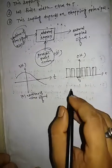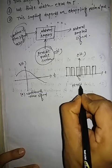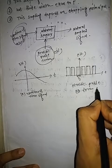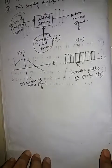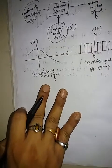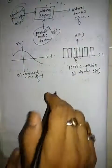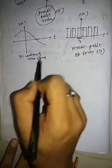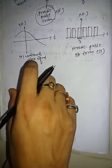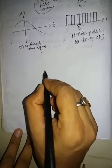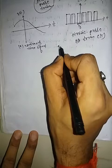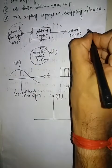We have the continuous time signal and the periodic pulse train CT. These two signals are multiplied with each other, and the result generates the natural sampled signal, denoted by GT.